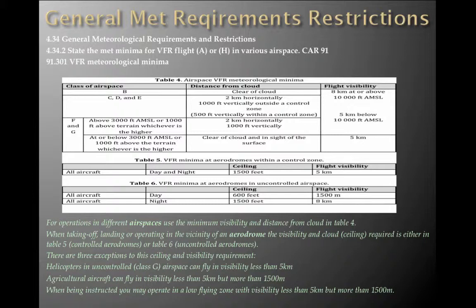For operating in different airspaces, we use Table 4. When taking off, landing, or operating in the vicinity of an aerodrome, the visibility and cloud ceiling required is either within a control zone — day or night, 1,500 feet ceiling, visibility of 5K — or in uncontrolled airspace: day is 600 feet ceiling, flight visibility 1,500 metres; night is 1,500 feet ceiling and flight visibility of 8K.